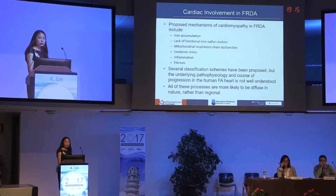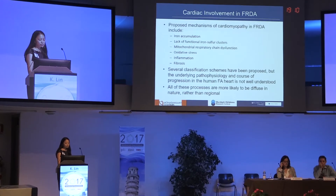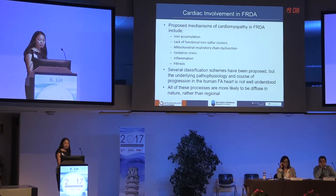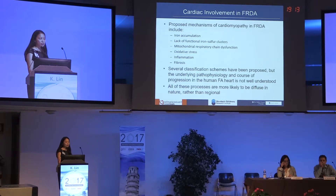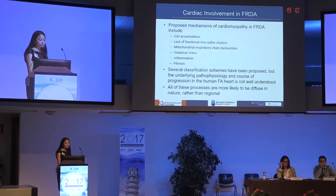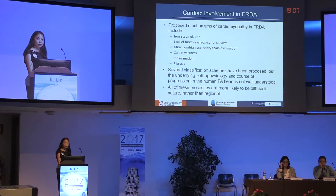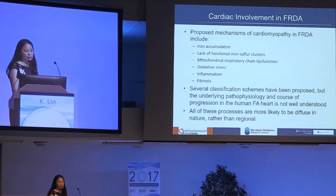There are many proposed mechanisms of the cardiomyopathy seen in Friedreich's ataxia, including iron accumulation, lack of functional iron-sulfur clusters, mitochondrial respiratory chain dysfunction, oxidative stress, inflammation, and fibrosis. Several classification schemes have been proposed for the cardiomyopathy in FA, but the underlying pathophysiology and the course of progression in the human FA heart is really not well understood.